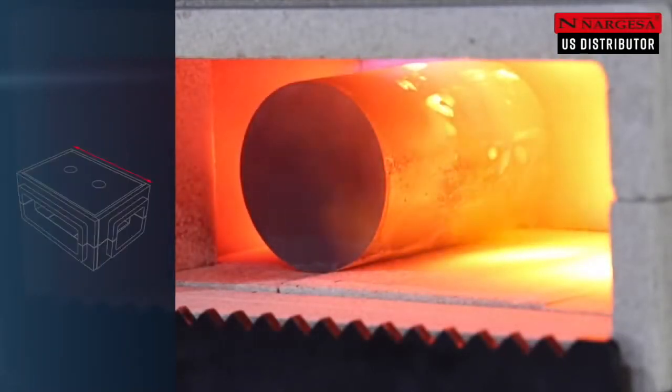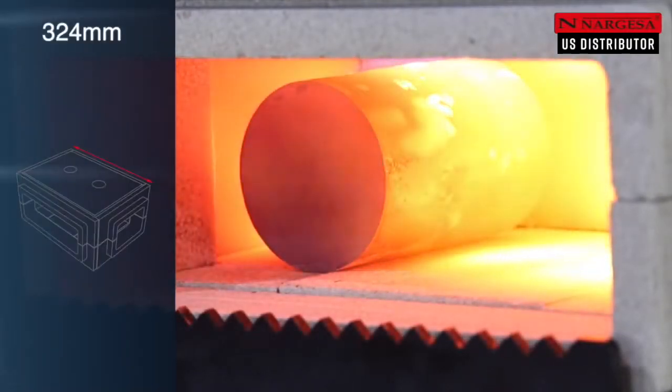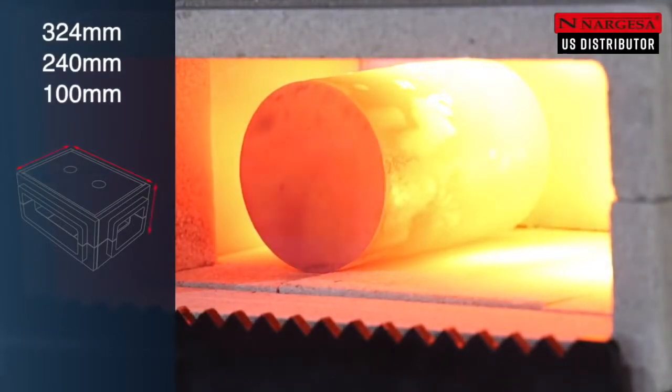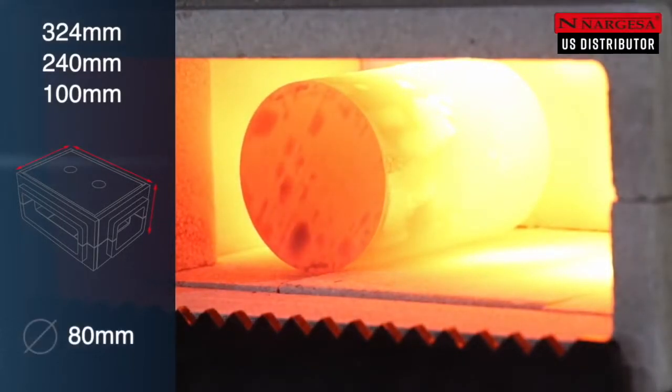The dimensions of the combustion chamber, 324 millimeters wide by 240 deep and 100 high, allow the heating of a round bar up to 80 millimeters.